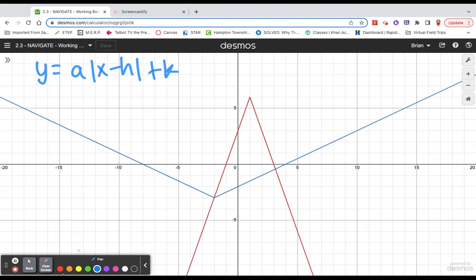Let's start with the red graph. A couple things to notice about the red graph. Notice first that it is facing the wrong direction. That gives away that at the very least, a has to be negative.